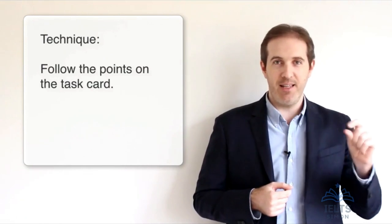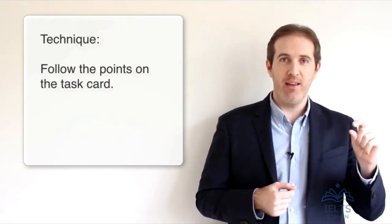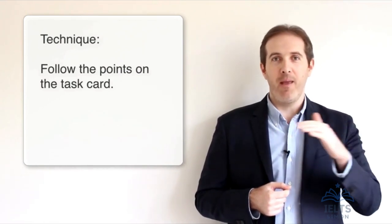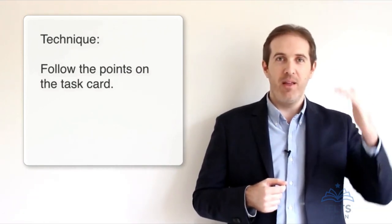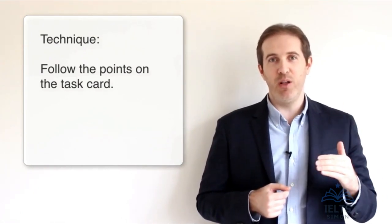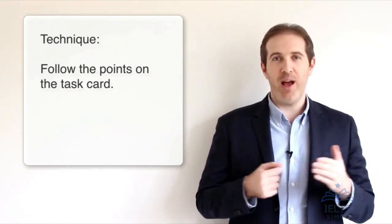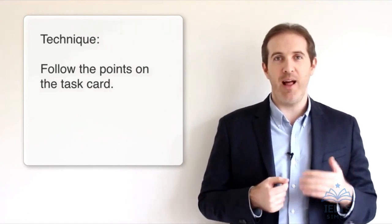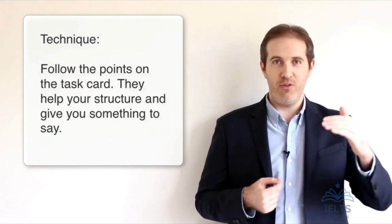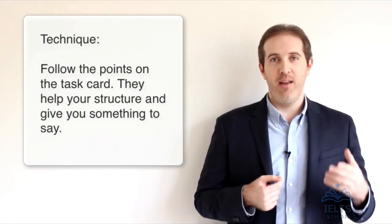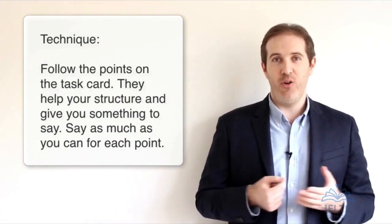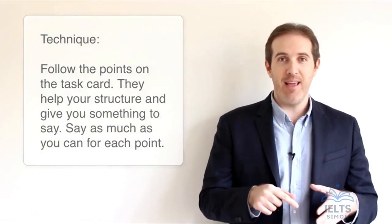So if the main task is 'describe a person who you like', below that it will say: who is this person, how do you know them, why do you like them. There'll be some bullet points below the main task — use those bullet points to help you. You don't have to cover them all, but I recommend that you do because they help your structure and give you something to say. So you go through, saying what you can about those bullet points.